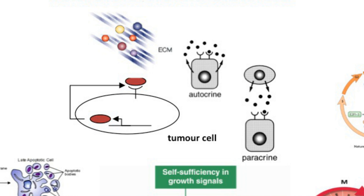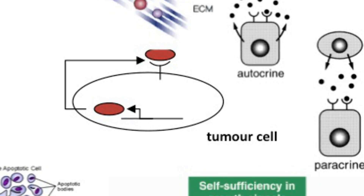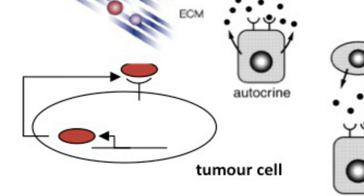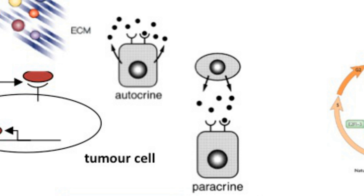The first of these properties is a cancer cell's self-sufficiency in growth signals. In order to continue growing and dividing, cancer cells will often produce their own growth factors by up-regulating the gene expression of various growth factors, or by up-regulating the expression of the cell surface receptors that bind to these growth factors. Often cancer cells will do both. This is an example of autocrine signalling.